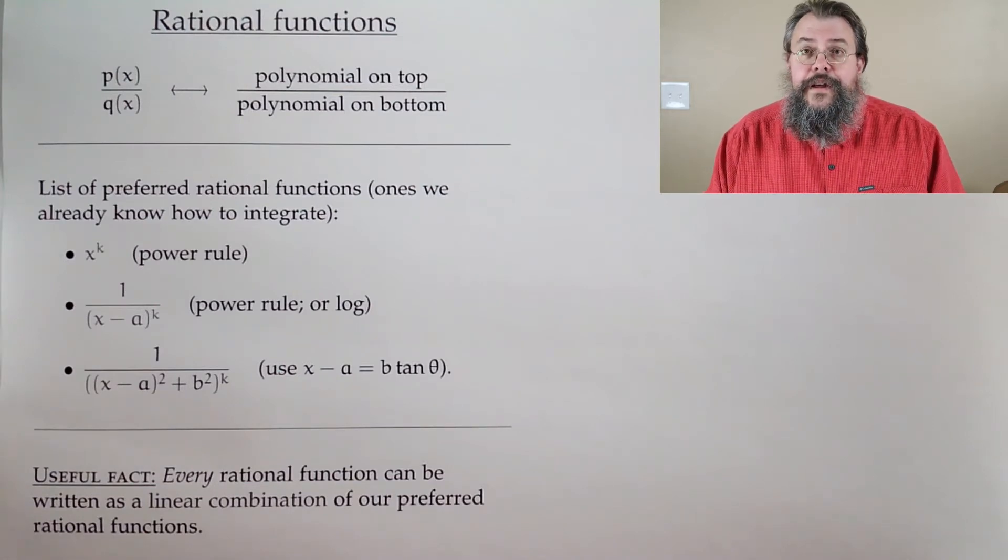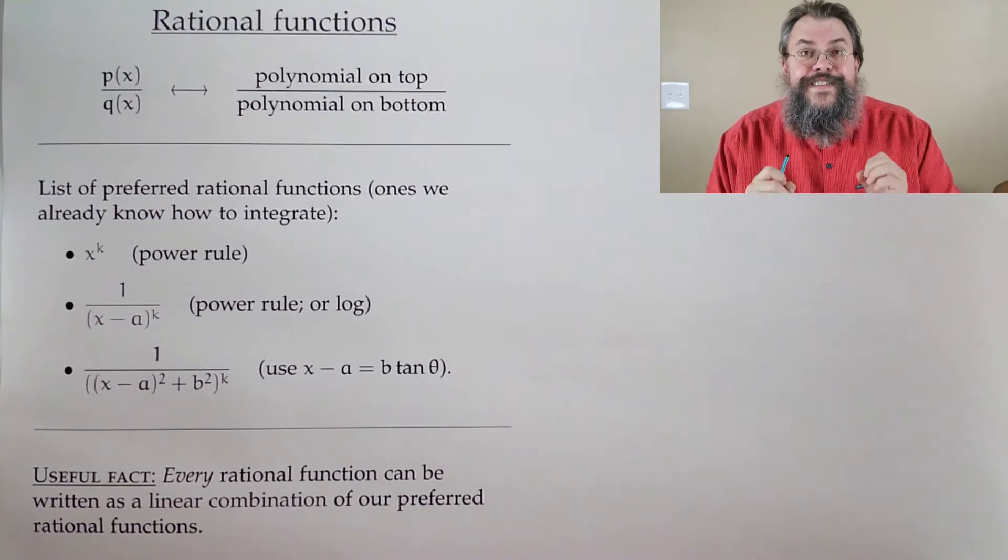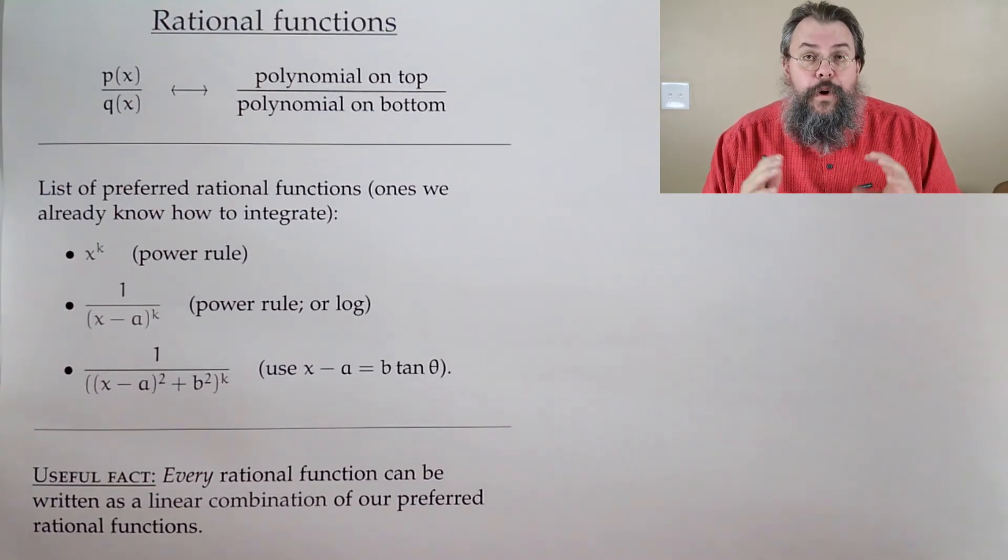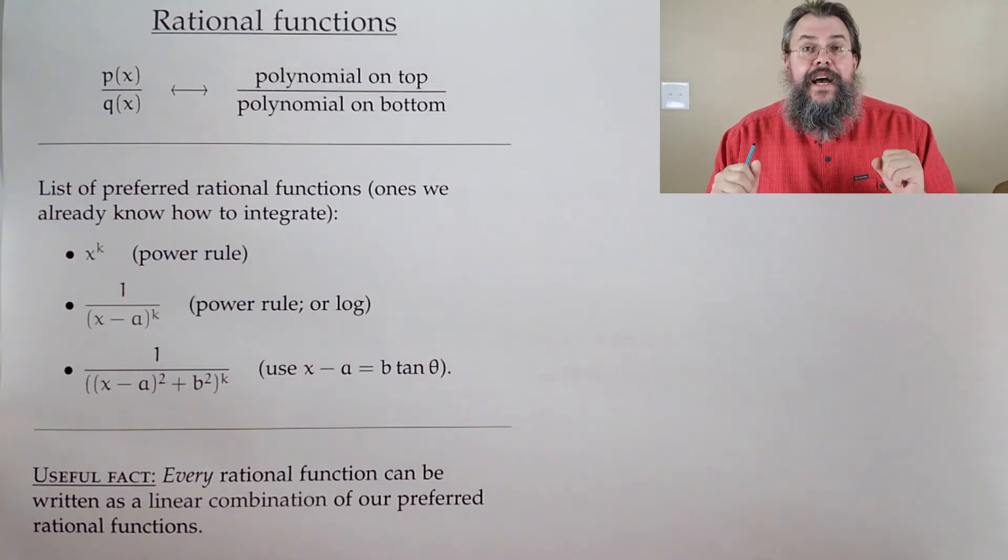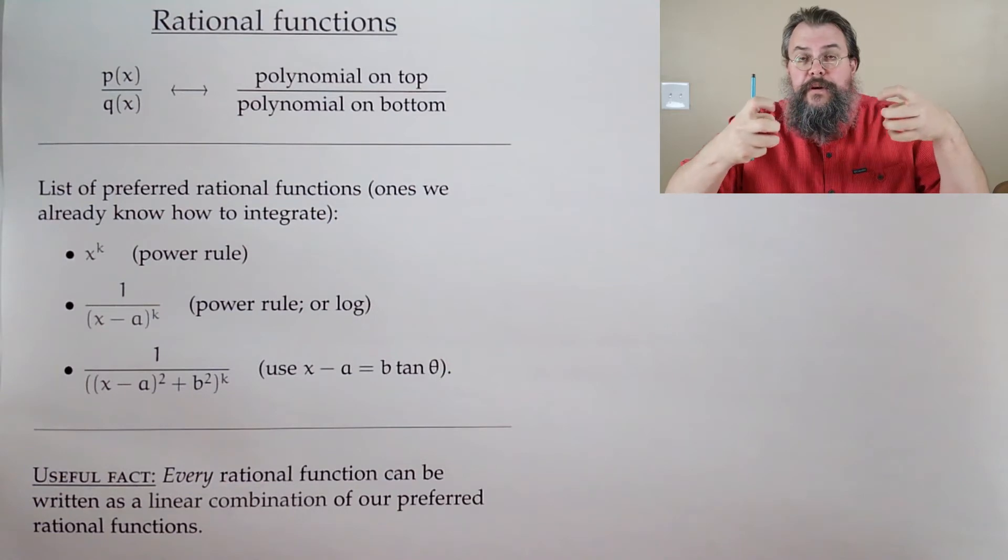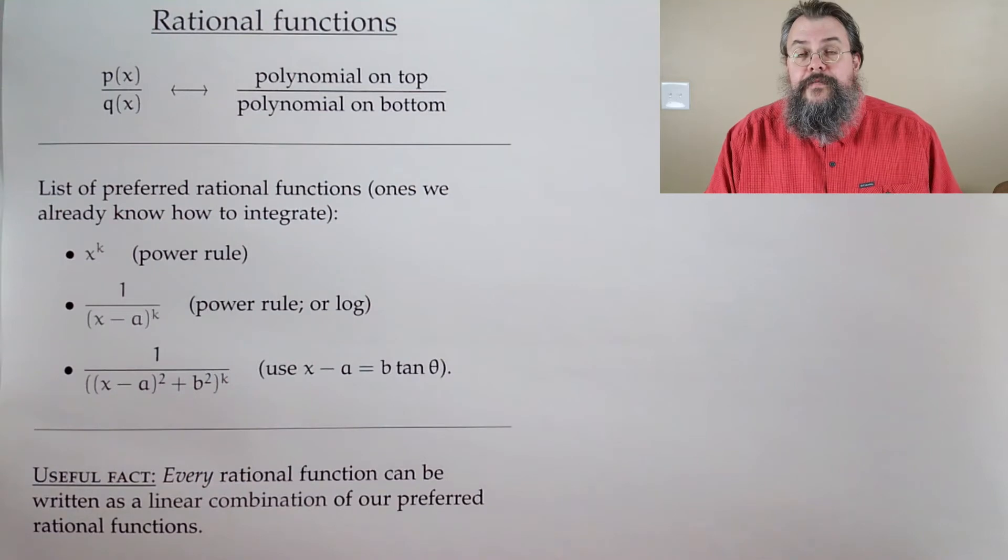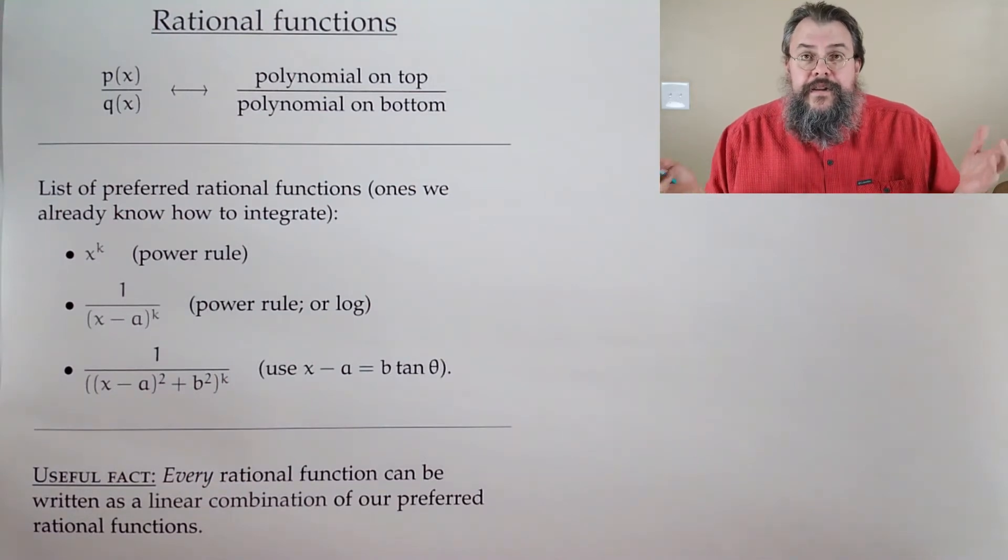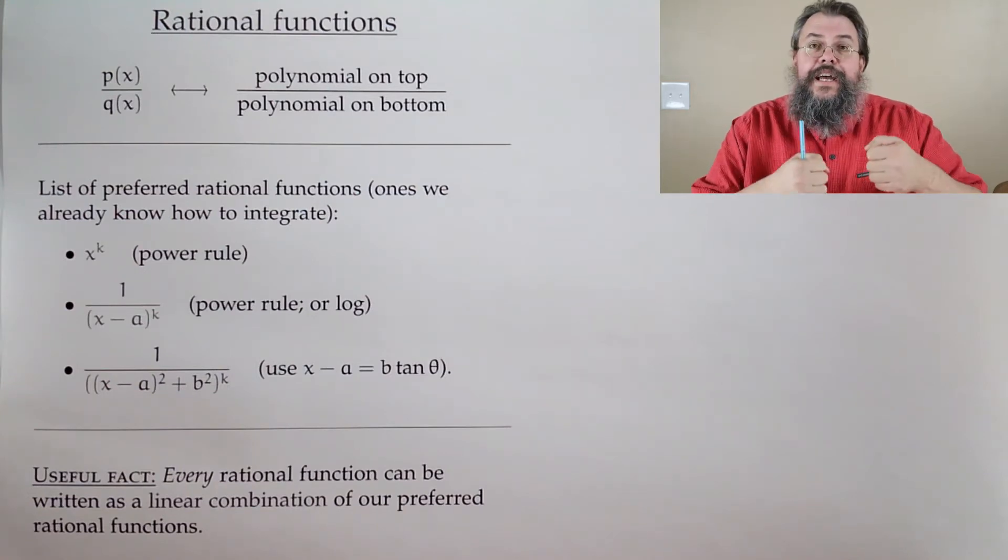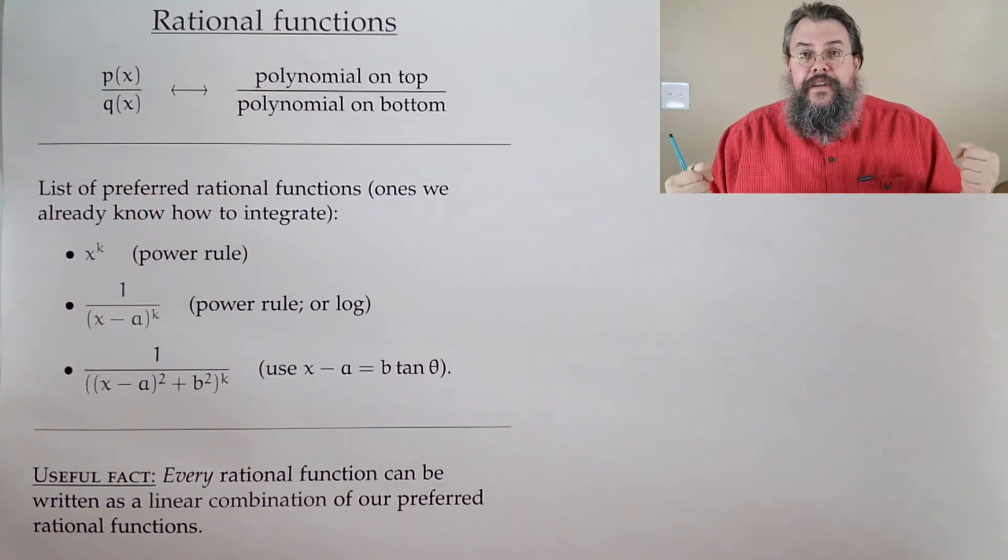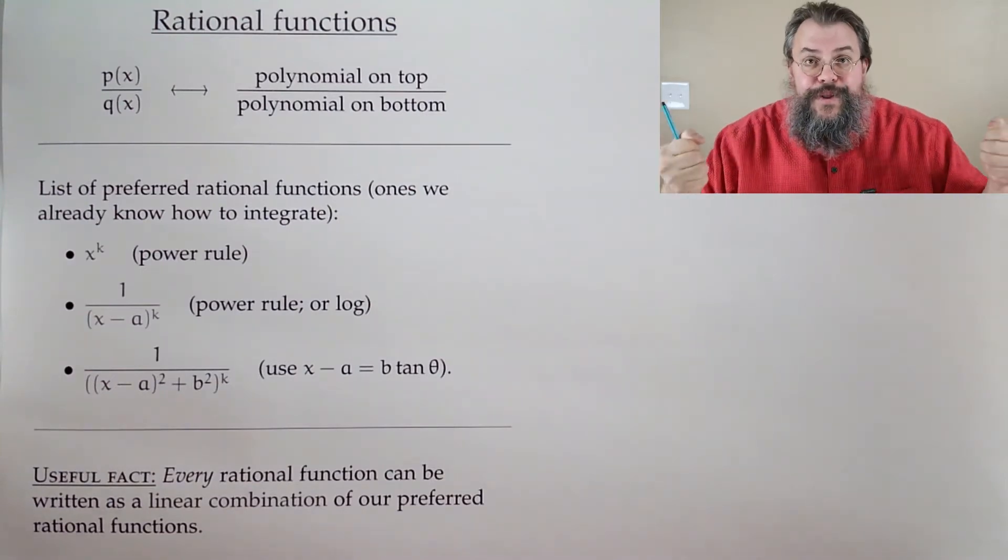These are some examples of rational functions we like. There are rational functions we might not like. This is the really cool fact. It's true, that says every rational function can be pulled apart as a combination of these three things. You don't have necessarily all three of them simultaneously, but every rational function can be rewritten in a nice way. So that's what partial fractions is. How do you pull things apart?